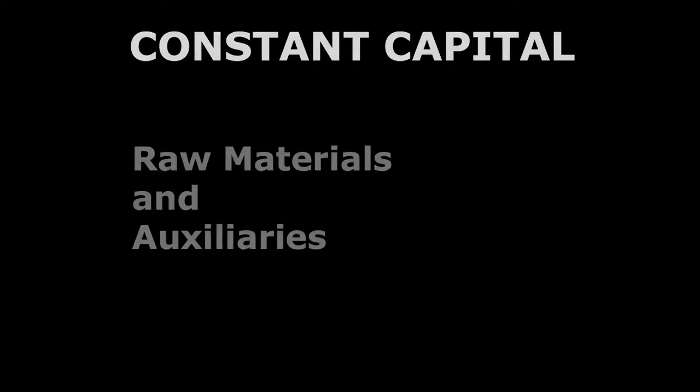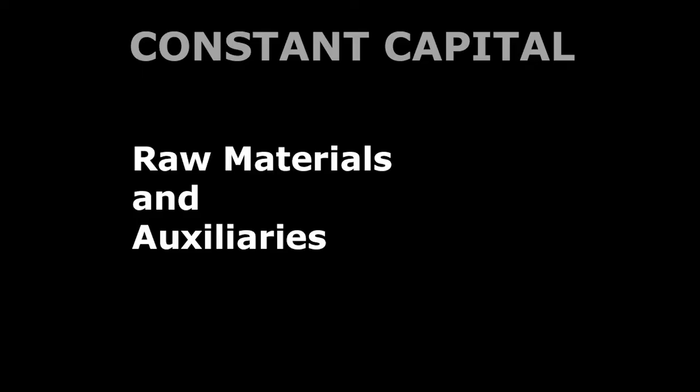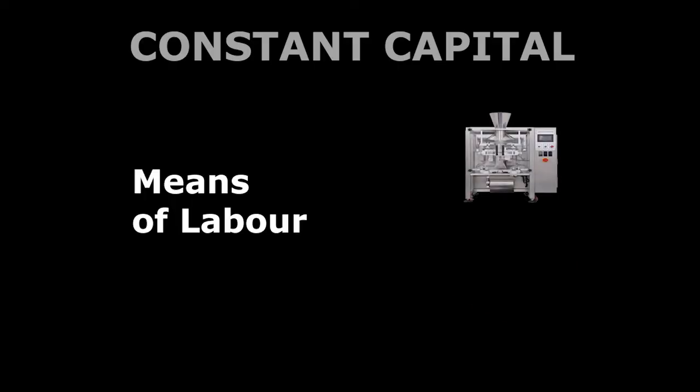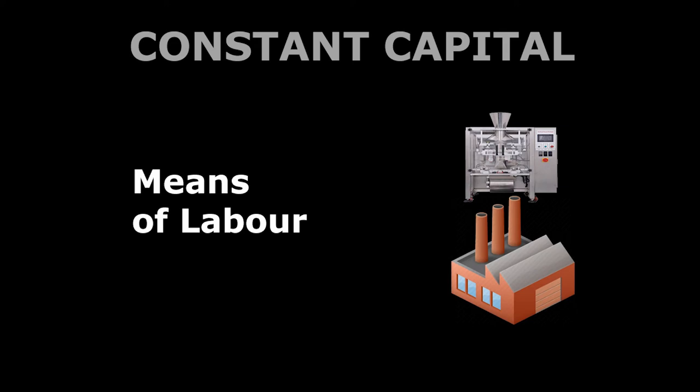Marx makes a brief distinction of aspects within constant capital: that of raw materials and auxiliaries, whose values are used up and transferred instantly — things like coal that is burnt to heat steam-powered machines, or sand that is turned into glass. These things transfer their value to the product in one go, as opposed to means of labour which depreciate and transfer their value bit by bit or slowly over time through labour processes, like our hat-making machine, or even the factory building itself, which transfers its value into the products over many, many years. The main takeaway here, though, is that constant capital can never add more value to the product than they themselves possess.